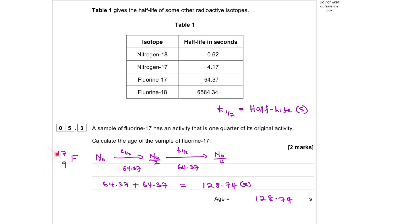One-quarter means a quarter of the original. This is fluorine-17. The original mass decreased by half, original over 2, and the half-life is 64.37. Then the half again decreases by half. So that's original over 4. The half-life is the same. So if we add the two half-lives together, we get 128.74 seconds.